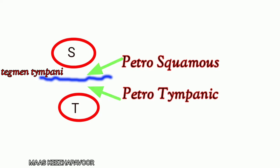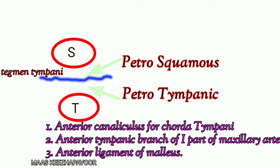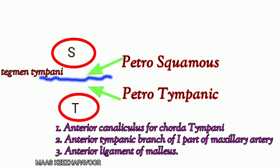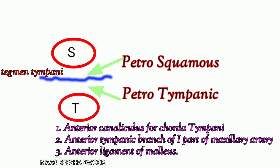Out of these two, there are three structures in the petrotympanic fissure: the anterior canaliculus for chorda tympani, the anterior tympanic branch of the first part of the maxillary artery, and the anterior ligament of malleus.